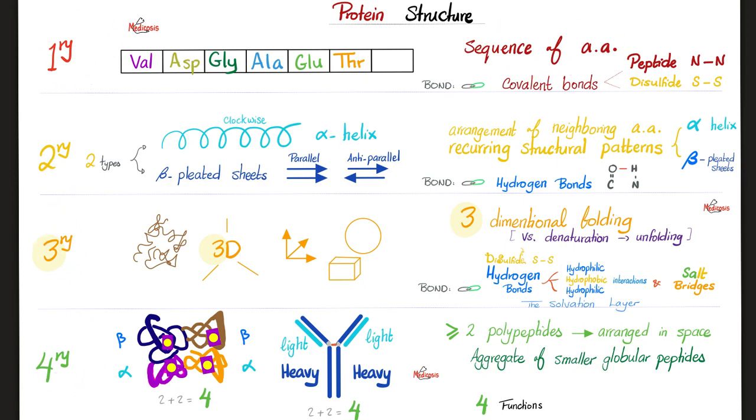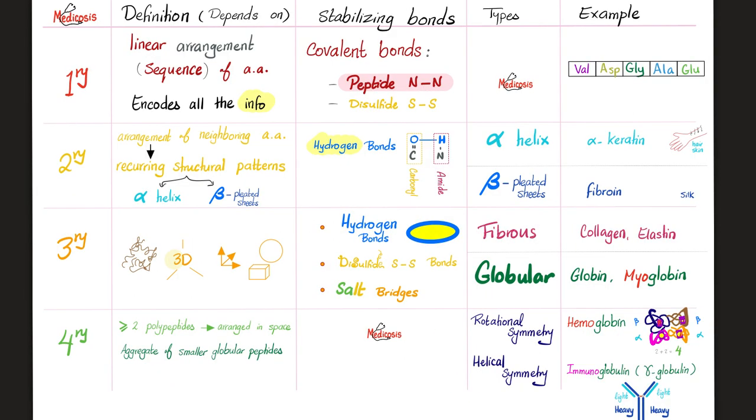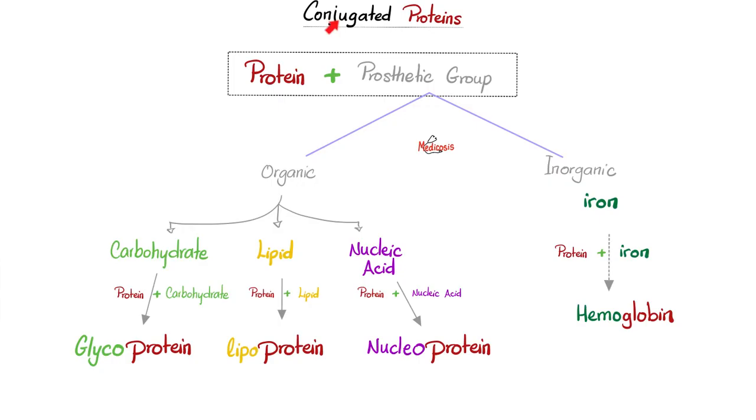Protein structure could be primary, secondary, tertiary, or quaternary. Primary is the sequence of amino acids. Secondary is the recurring patterns, such as alpha helix and beta pleated sheets. Then the three-dimensional is known as the tertiary structure. And then two plus two is four—this is the quaternary structure. This is a comparison table among the protein structures, as we discussed before. Please pause and review. Conjugated proteins is a protein plus something else, aka a prosthetic group.